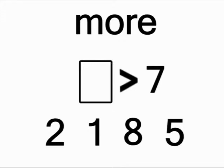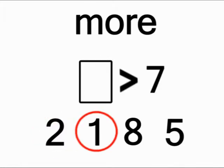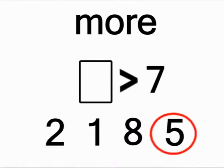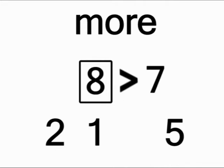Which of these numbers is more than seven? Is two more than seven? No, two is less than seven. Is one more than seven? No, one is less than seven. Is eight more than seven? Yes, eight is more than seven. Is five more than seven? No, five is less than seven. The correct answer is eight, because eight is more than seven.